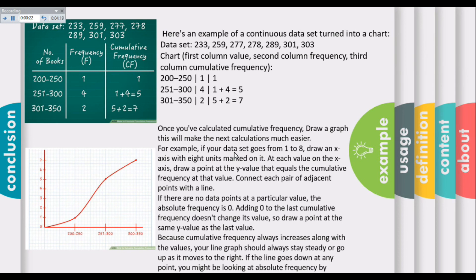Once cumulative frequency is calculated, draw a graph. If your data set goes from 1 to 8, draw an x-axis with 8 units marked on it. At each value on the x-axis, draw a point at the y-value that equals the cumulative frequency. Connect each pair of points with a line.